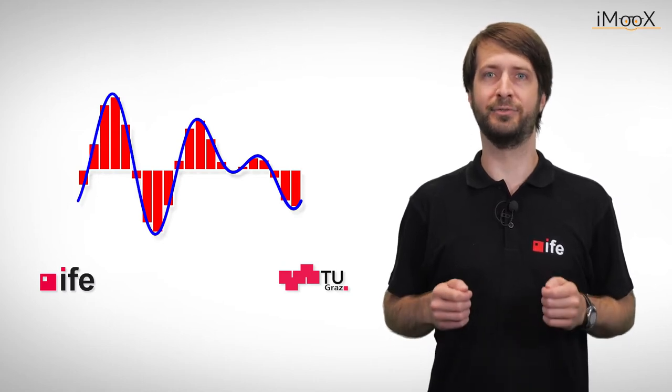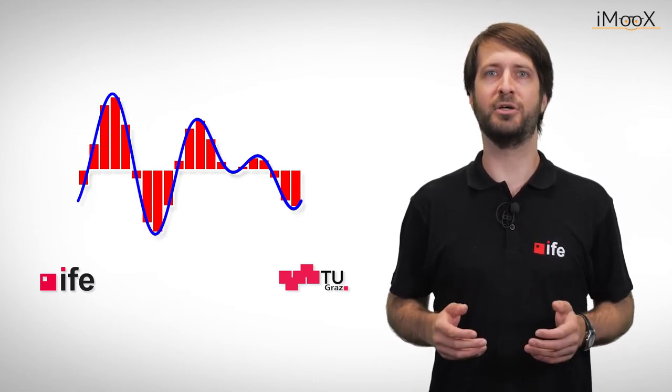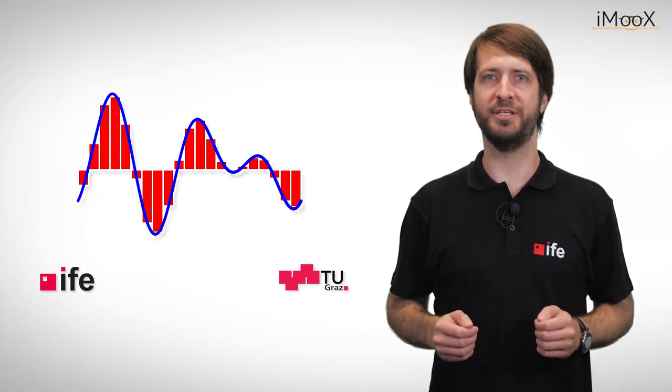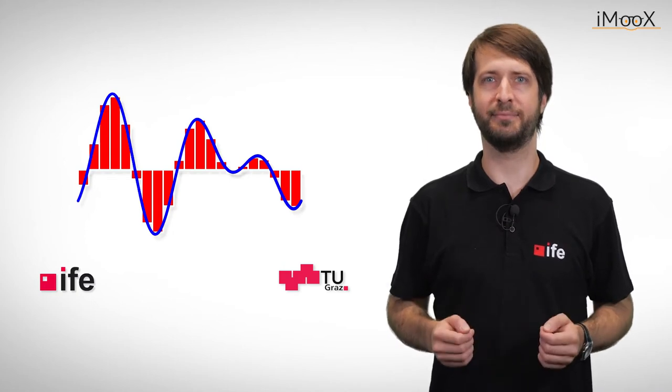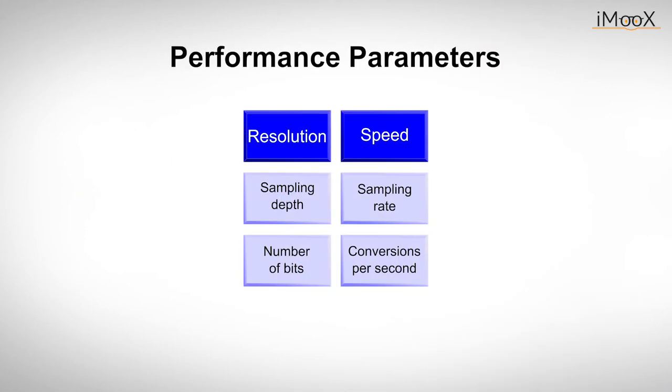Before we get into detail with the implementation of some basic ADC topologies, we would like to summarize the most important parameters of ADCs. Two of the things we probably want to know first about our analog-to-digital converter is how accurately and how fast it converts an analog input signal into a digital output value. So the main two parameters to look for are resolution and speed.